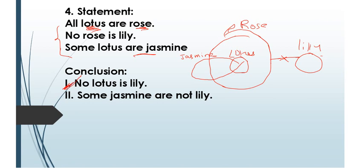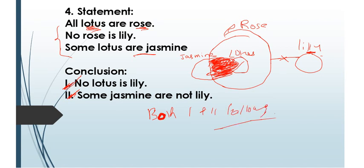Conclusion 2: some jasmine are not lily. In the overlapping part, jasmine shares rose, and no rose is lily, so that portion of jasmine cannot be lily. Therefore conclusion 2 is also definitely true. Answer: both conclusion 1 and conclusion 2 follow.